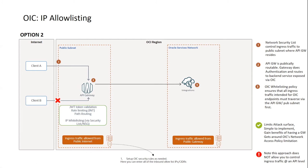There are a couple of advantages to this approach. Obviously it achieves what we set out to do, but by adding a gateway you can also benefit from things the gateway brings, such as authentication and rate limiting. The second notable benefit is service abstraction — if you have a gateway sitting in front of OIC, it gives you the flexibility to change your back-end integration endpoints without affecting your clients.